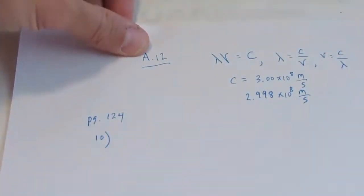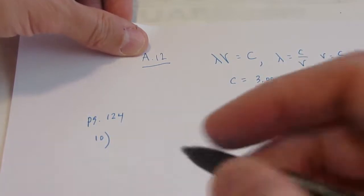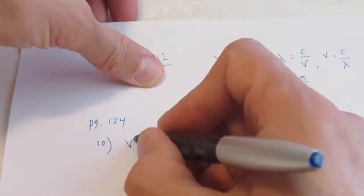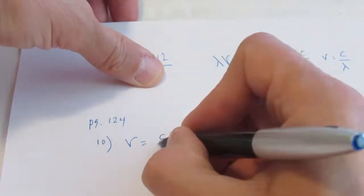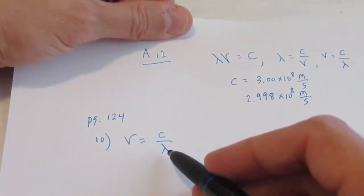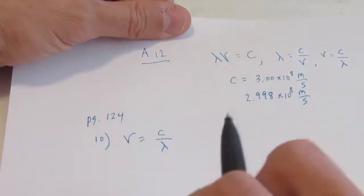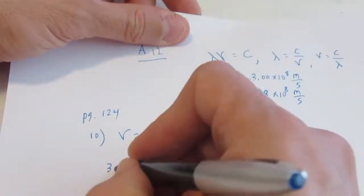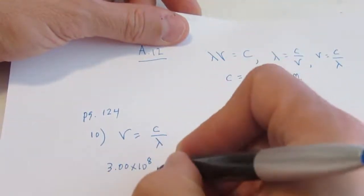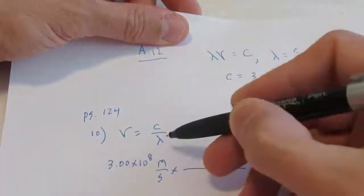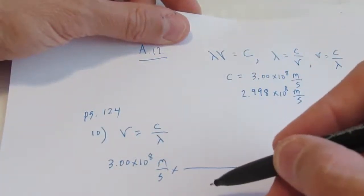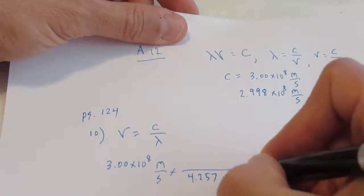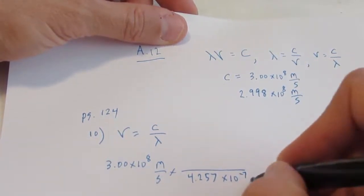Let's try to keep this sort of simple. On number 10 I give you the wavelength and I ask you to solve for the frequency. So frequency, if I'm solving for frequency, is C divided by the wavelength. If you read the question, I do give you the wavelength in quarters and centimeters, so we're going to have to massage that a little bit so the units work. C goes on top: 3.00 times 10 to the eighth meters per second. And we're dividing by wavelength, putting that on the bottom: 4.257 times 10 to the negative seventh centimeters.